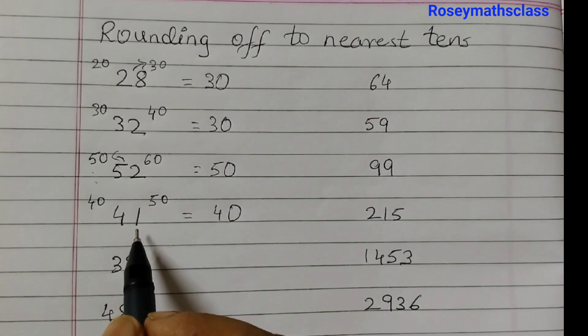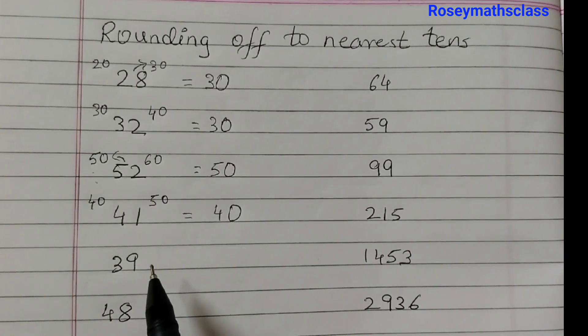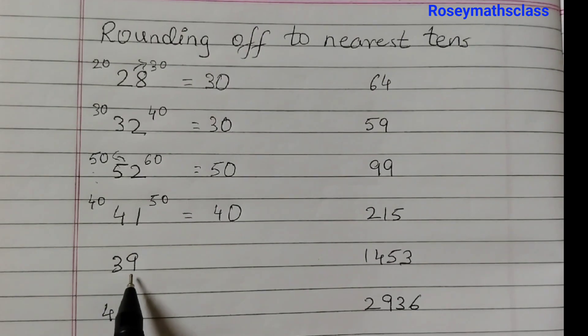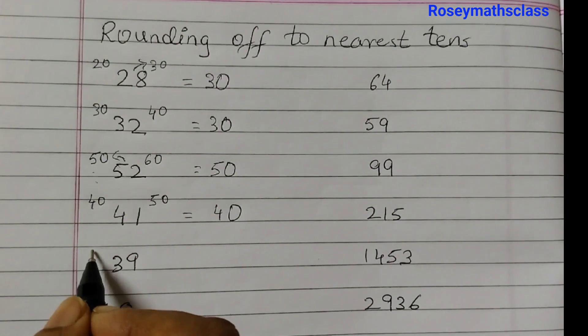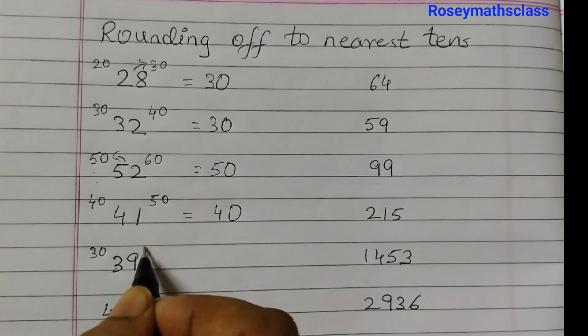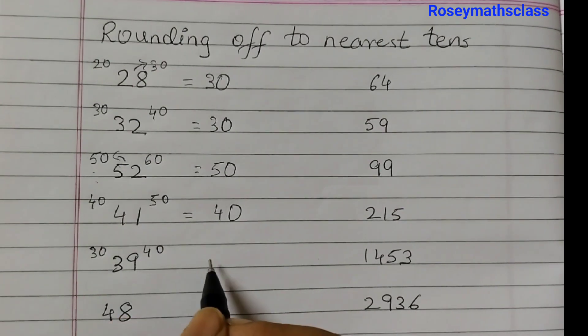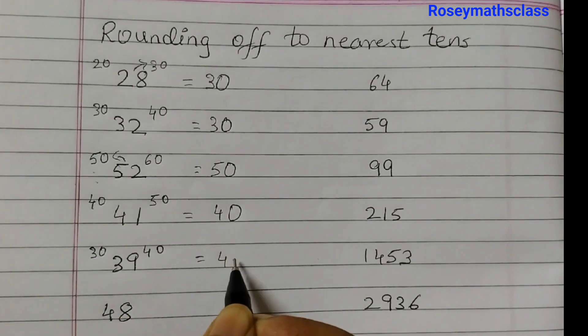And if it is 5, 6, 7, 8, or 9, that will be rounded off to the bigger tens. Like 39. 39 is between 30 and 40. 39 is closer to 40, so that will be 40.